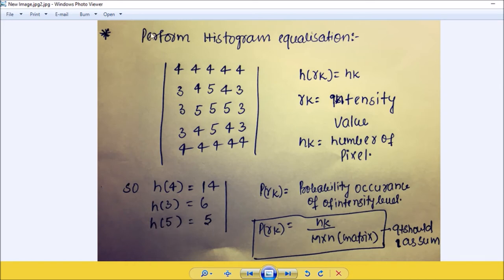Here p(rk) is the probability occurrence of the intensity level, and p(rk) equals nk upon m into n, where m is 5 and n is 5 because this is a 5 by 5 matrix. The sum of this should be 1.